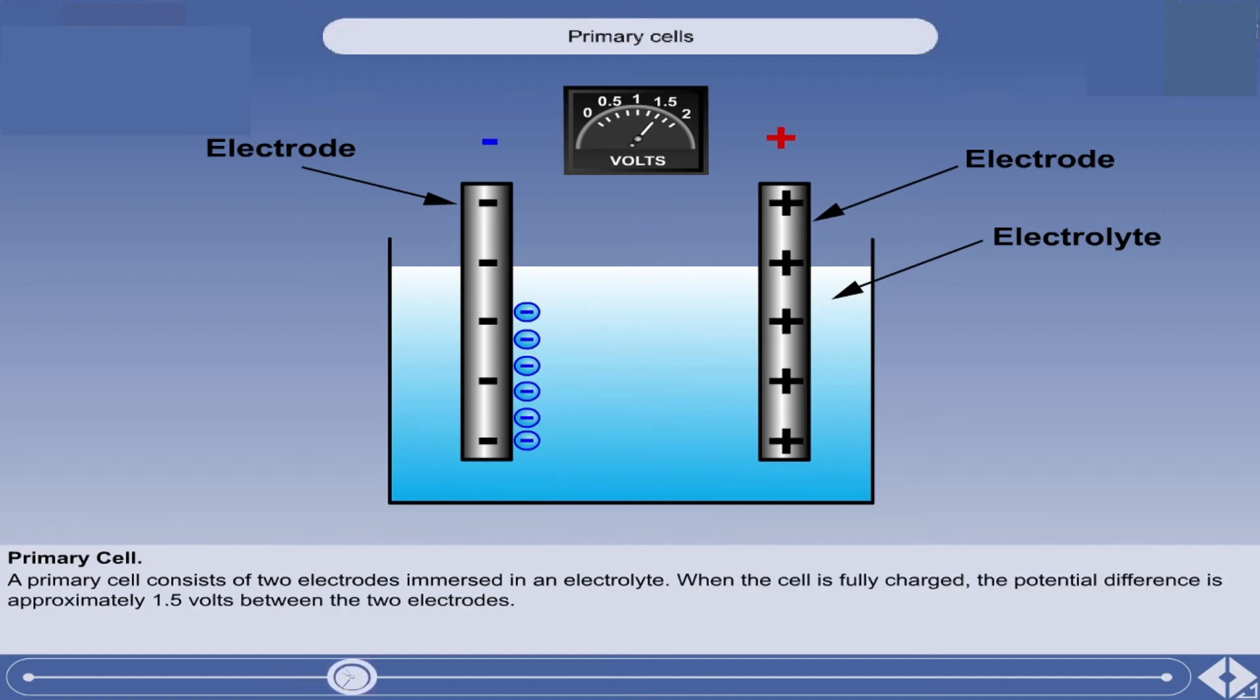When the electron transfer ceases, the cell is fully charged and the potential difference is approximately 1.5 volts between the two electrodes.